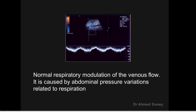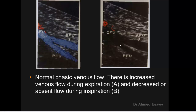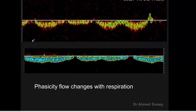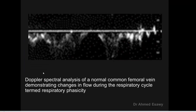Inspiratory modulation of venous flow — phasicity — is caused by abdominal pressure variation which increases during inspiration, causing decrease, absence, or retrograde flow in veins. Normal phasic venous flow by color: during expiration, veins are fully saturated with color — superficial femoral vein, deep femoral vein, and bifurcation of the common femoral. During inspiration, color desaturates or may show retrograde flow.